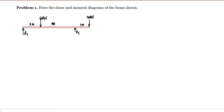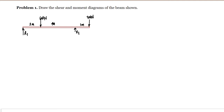Number one: draw the shear and moment diagram of the beam shown in the figure. We have a beam with a load of 60 kilonewtons and 30 kilonewtons. The first thing we are going to do is compute for the reactions of the supports — we need to determine the value of Reaction 1 and Reaction 2.